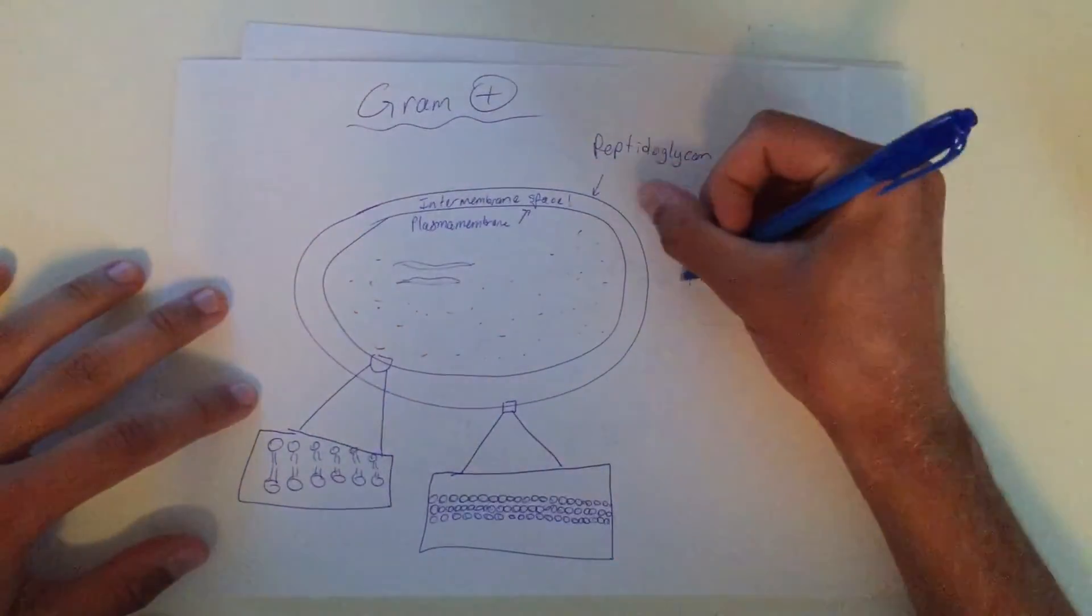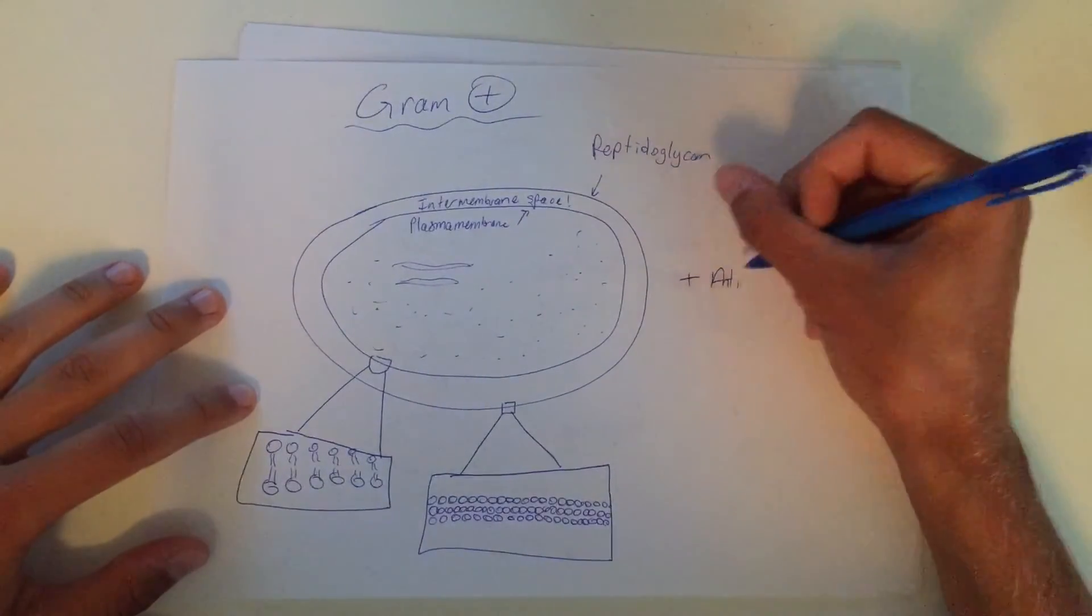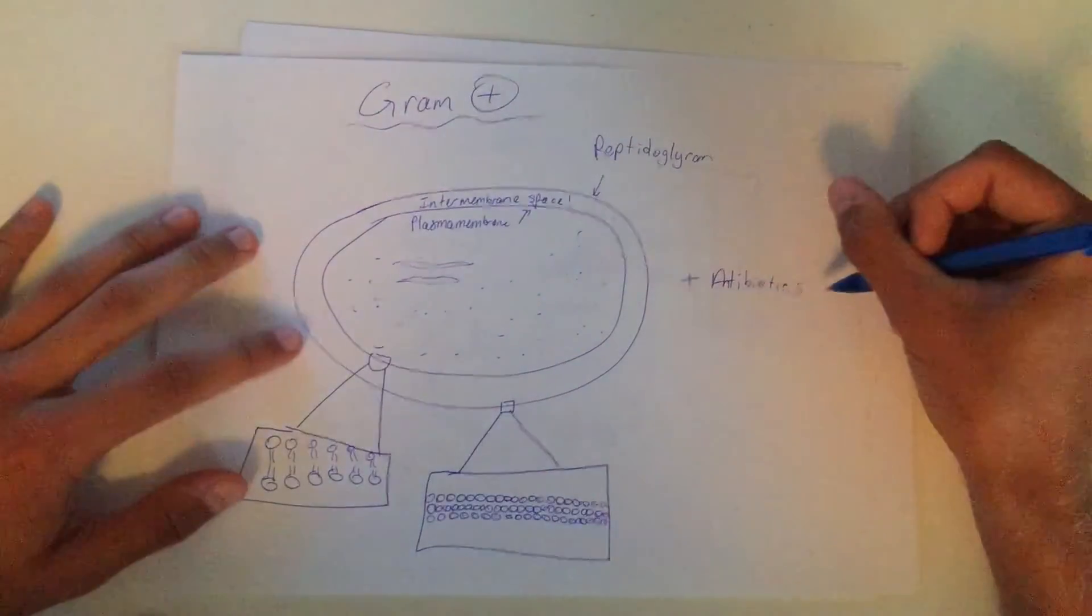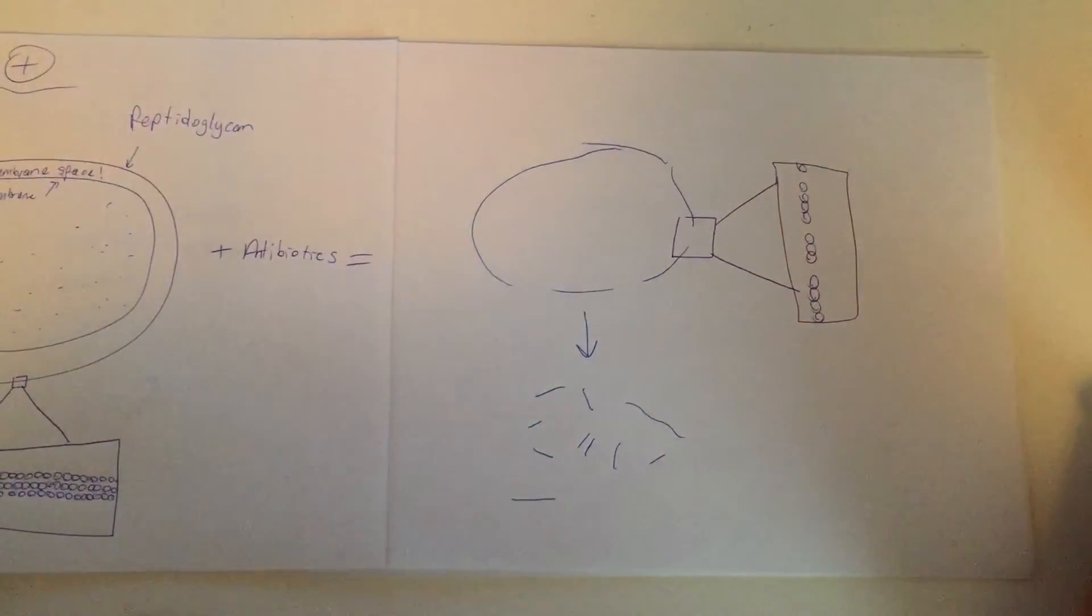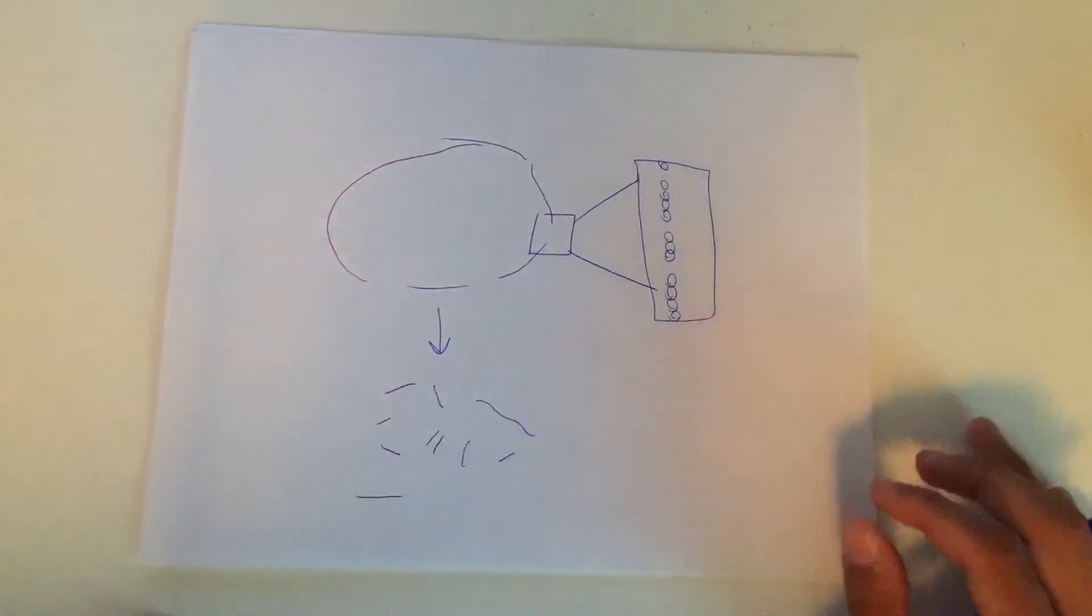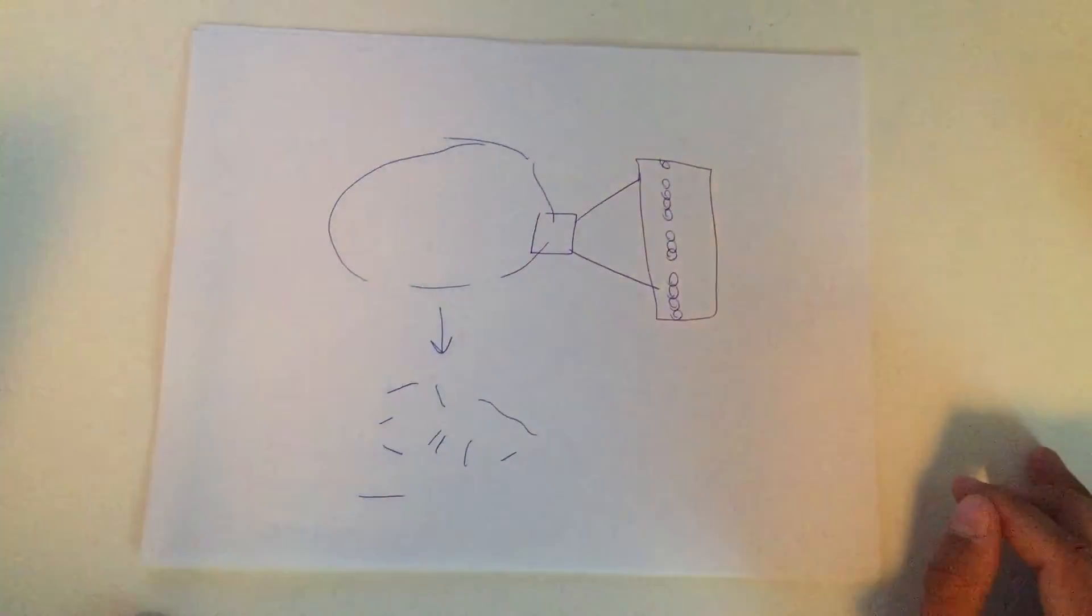Overall, the gram-positive bacteria plus the antibiotics equals a damaged bacterial cell wall. So when the bacteria tries to grow or reproduce, it will break apart and die, which means you're feeling funky fresh.